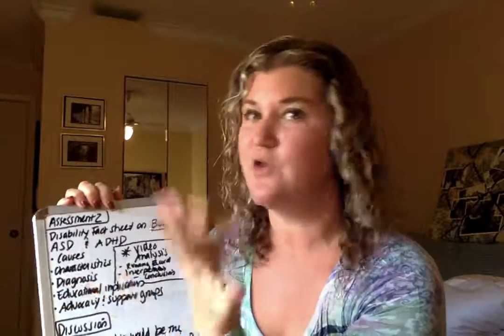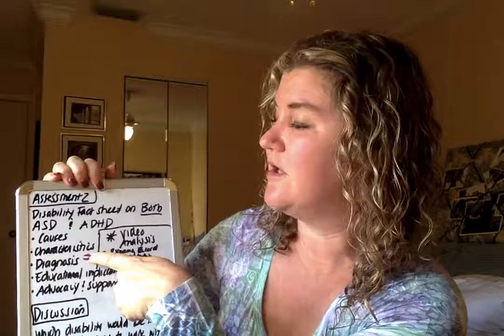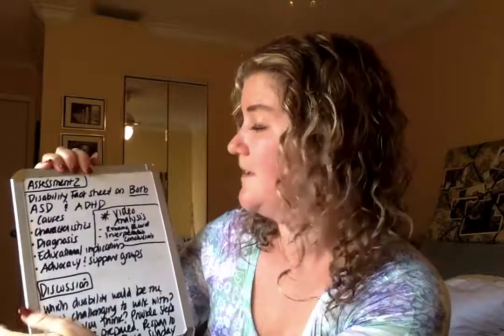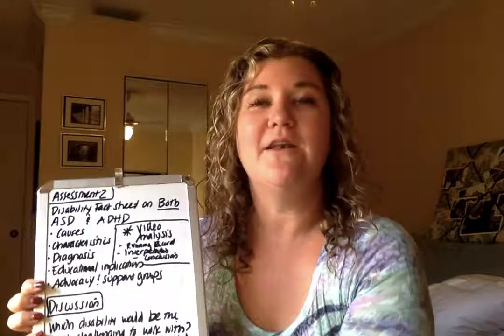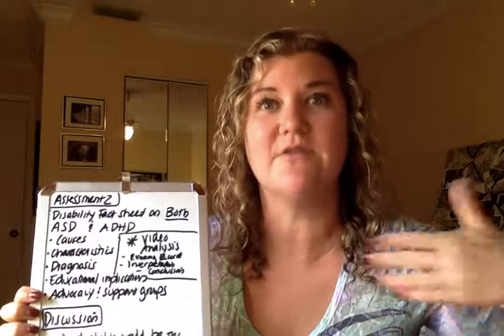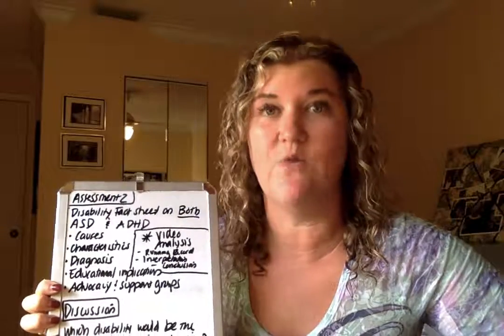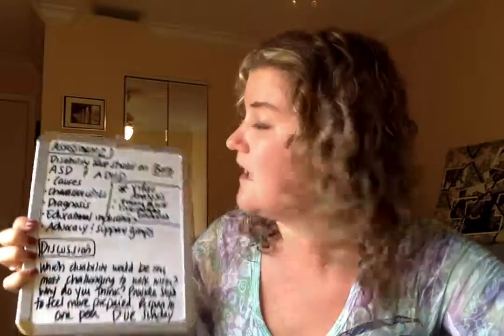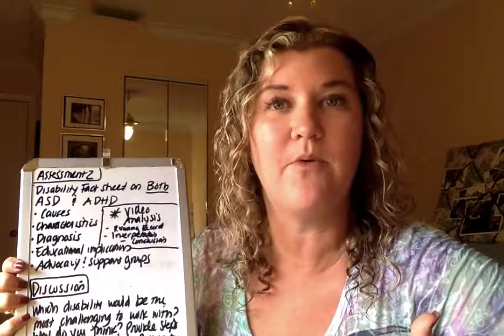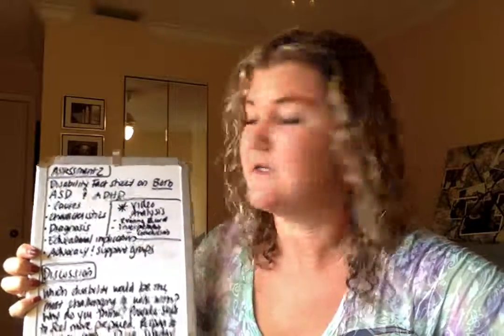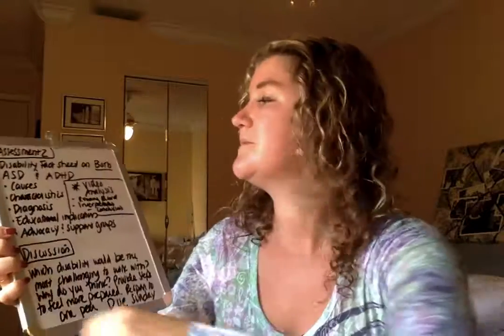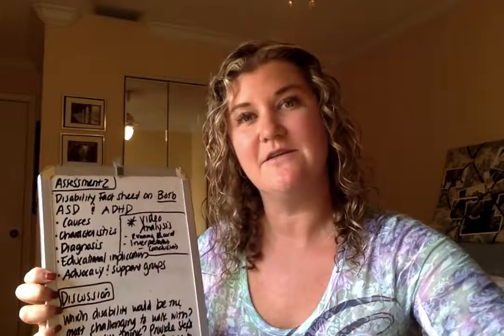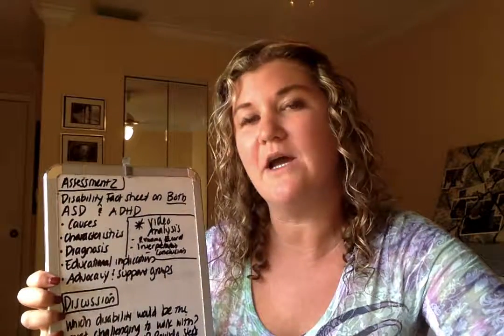In your fact sheets, cover the following sections: causes — what are the theories behind causes of ASD and ADHD; characteristics — what do these disabilities look like and what can we expect; diagnosis — how is it diagnosed; educational implications — what does it mean in your classroom if a student has this disability and how it impacts them; and lastly, advocacy or support groups — just give me a couple, as there are several for both disabilities.